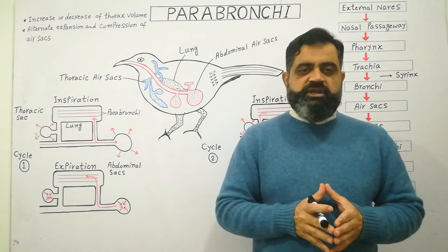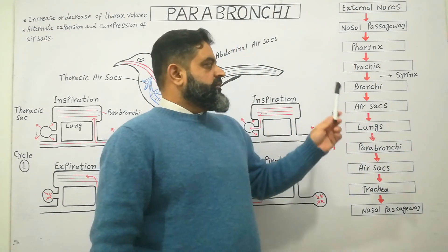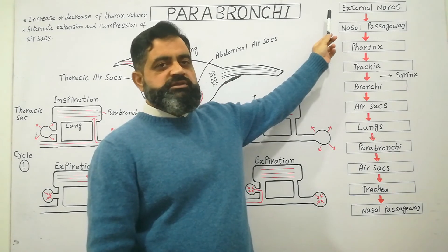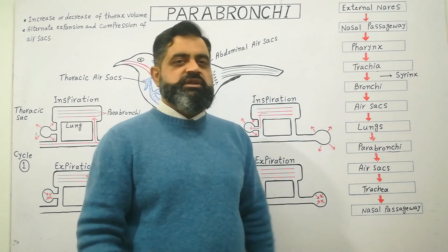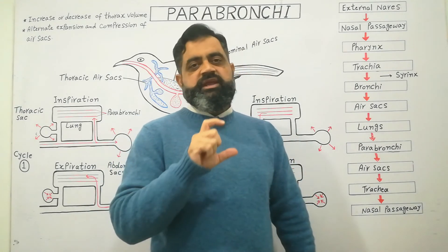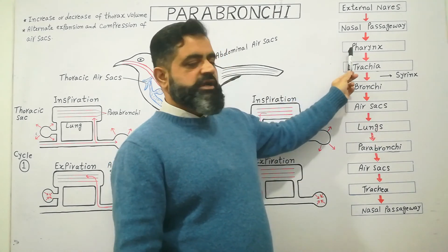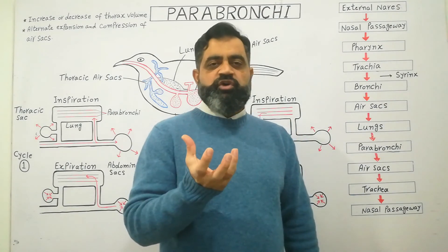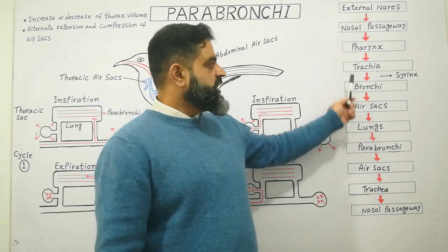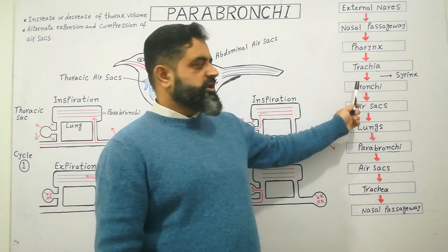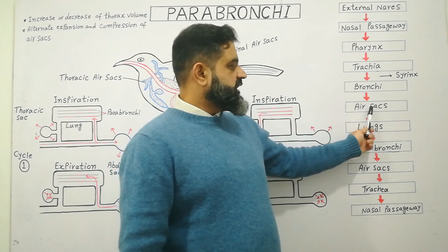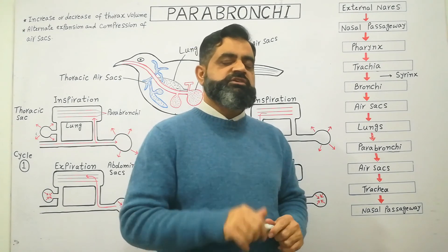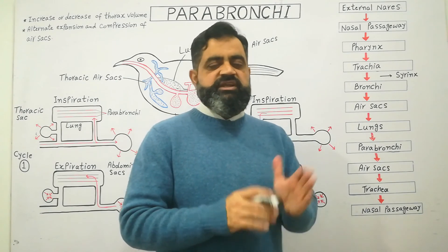To summarize: fresh oxygenated air enters through the external nares — small openings on the anterior side — and leads into the nasal passageway, where air is moistened and its temperature is regulated. From the nasal passageway, air enters the pharynx, then the trachea. At the end of the trachea is the syrinx, a voice box that helps in sound production. From the trachea, two bronchi lead into the air sacs, which join to form lungs. The lungs contain microscopic tubules known as parabronchi, associated with rich blood capillaries where gaseous exchange takes place.